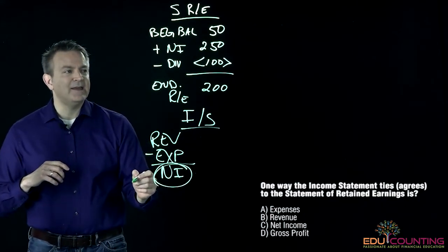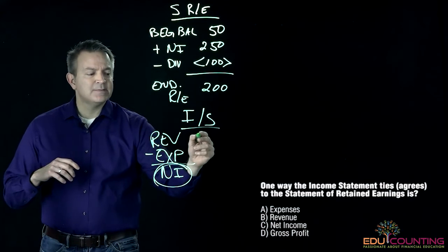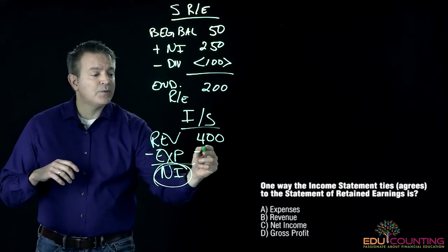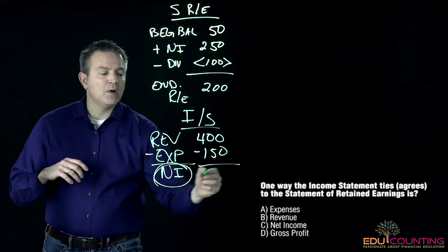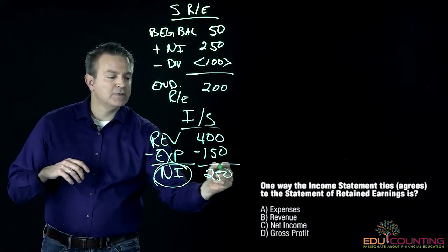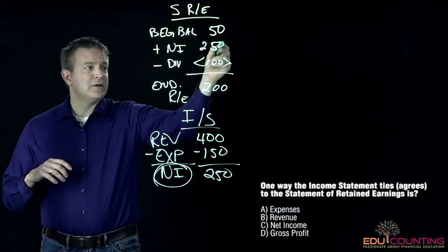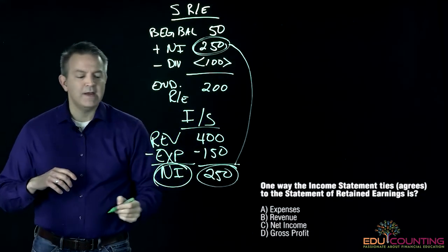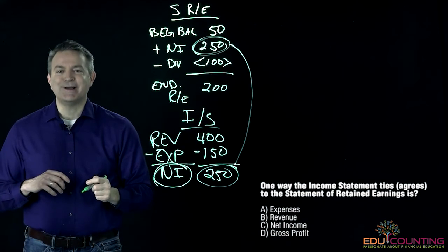We're going to see at the end of the day what the net income is. Let's make up the numbers. Let's say it's 400 that we started with, we subtract off 150, and what are we left with? We're left with 250. So that 250 in our net income is going to tie and agree to our net income on our income statement.